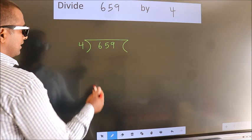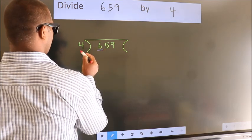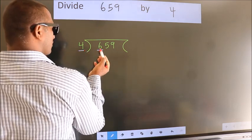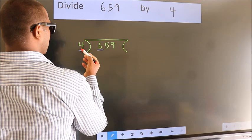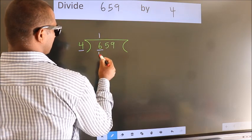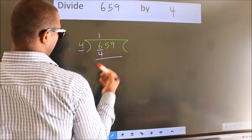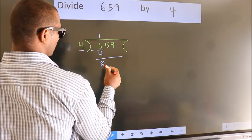Next. Here we have 6, here 4. A number close to 6 in the 4 table is 4 once 4. Now we should subtract. We get 2.